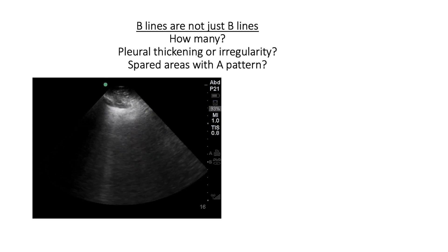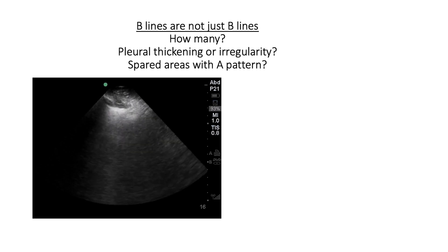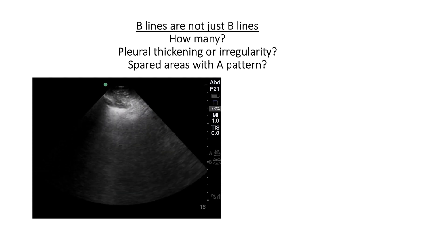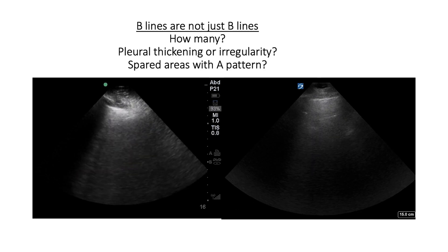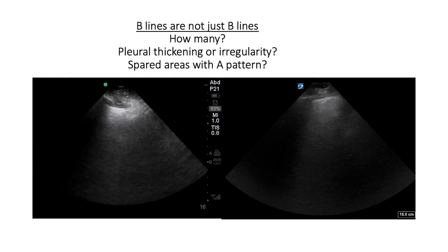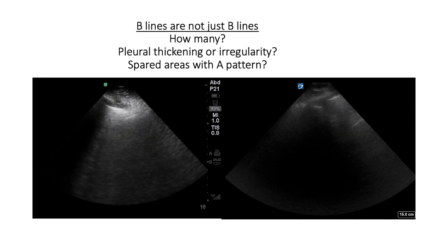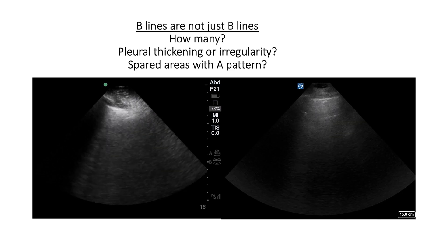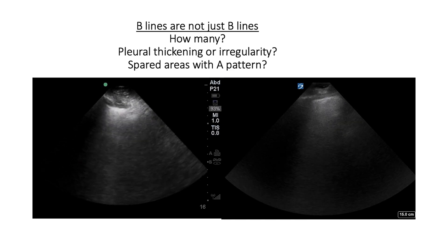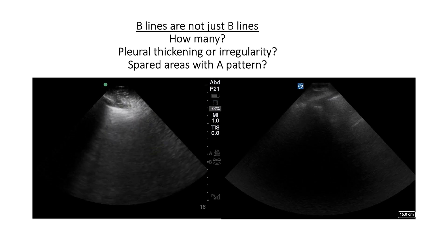It's important to realize that B lines are not just B lines — the number matters. Three is classically considered significant within a rib space. One to two at the bases can be considered normal, and it's non-binary: more B lines is more significant. Pleural thickening or irregularity can indicate an inflammatory process, and spared areas with A pattern can also indicate an asymmetric inflammatory process. The image on the left has no pleural thickening or spared areas, indicating more of a cardiogenic pulmonary edema. The image on the right has both pleural irregularity and spared areas with A pattern, indicating more of an inflammatory pattern. Note that these features do not distinguish perfectly, so it's best not to hang your hat on them alone.